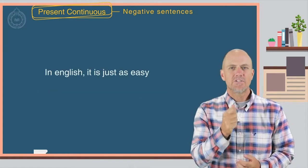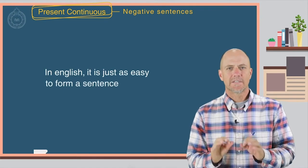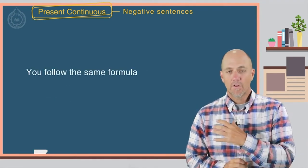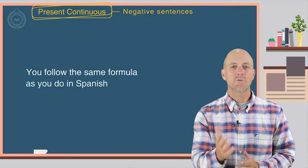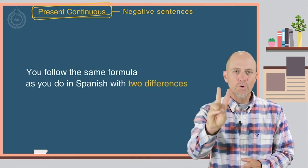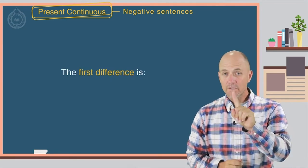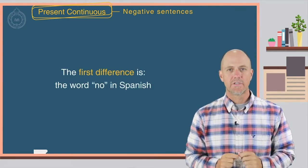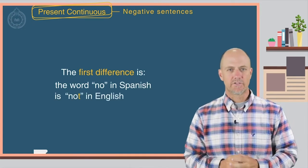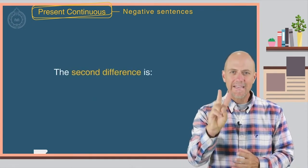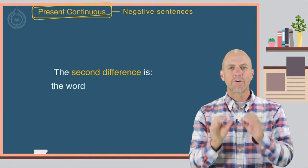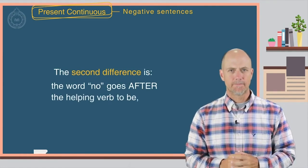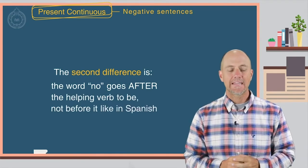In English, it is just as easy to form a sentence in the present continuous tense. You follow the same formula as you do in Spanish with two differences. The first difference is the word no in Spanish is not in English. The second difference is the word not goes after the helping verb to be, not before it like in Spanish.